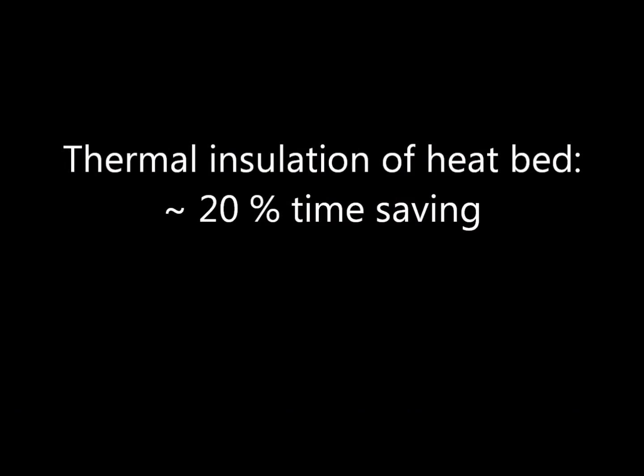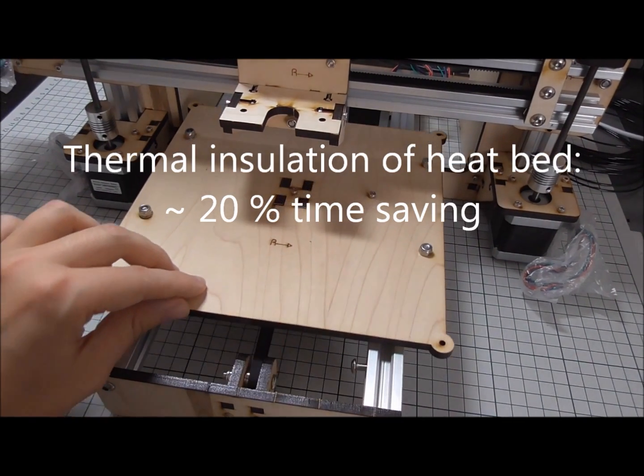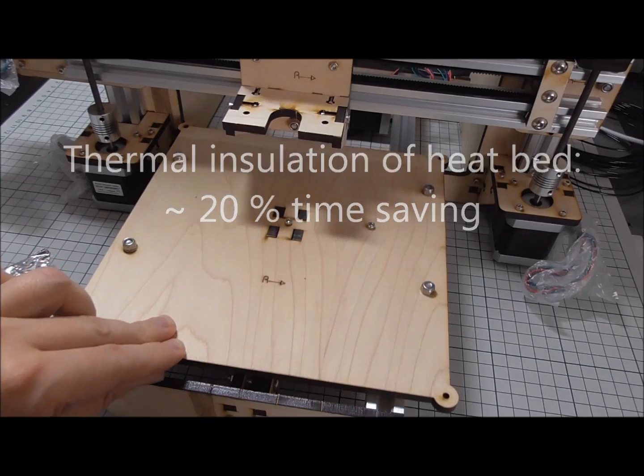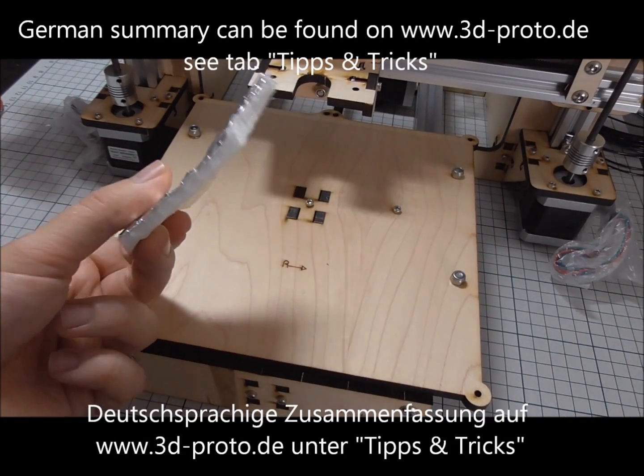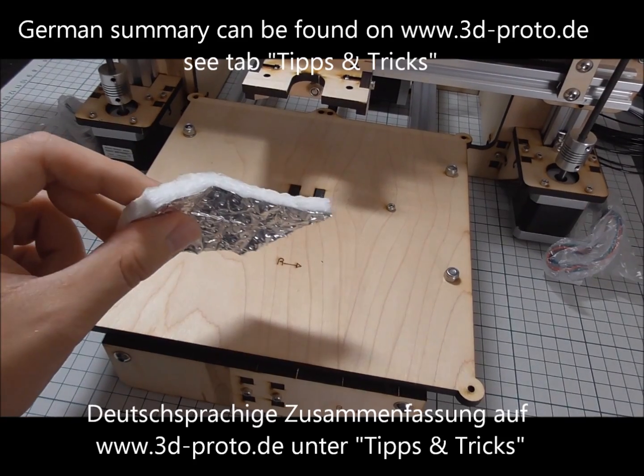My first tip. You can thermally insulate the print bed from below. The print bed usually has a gap between PCB and mounting plate. You should try to fill this gap with insulating material which can stand higher temperatures.